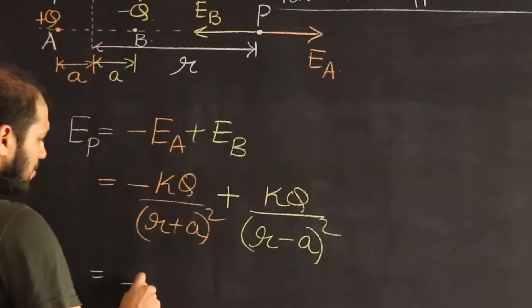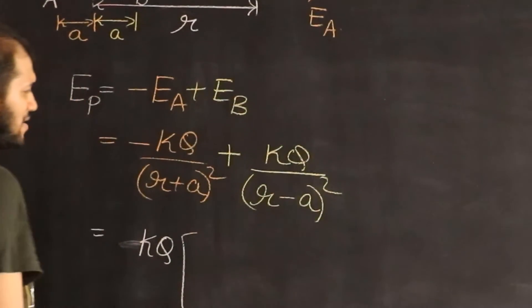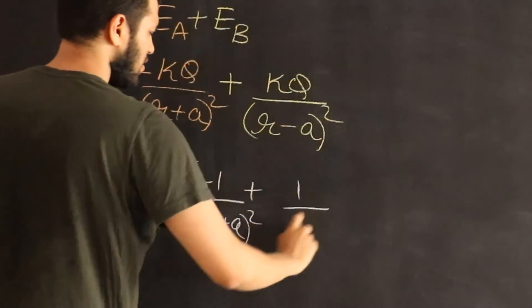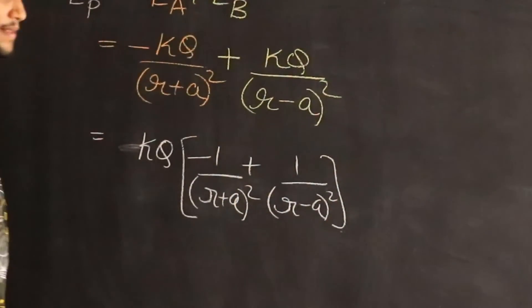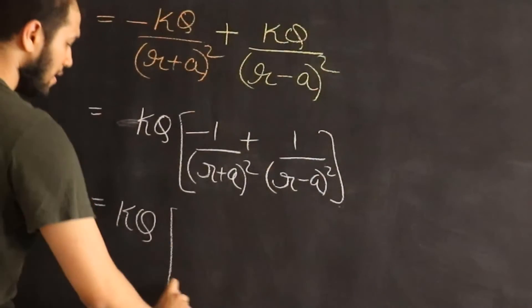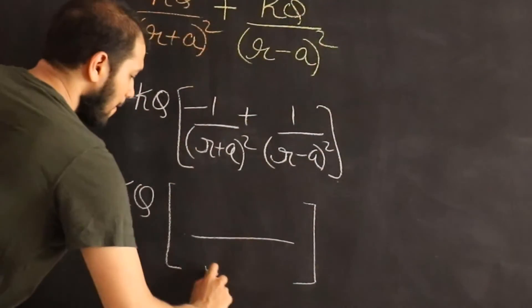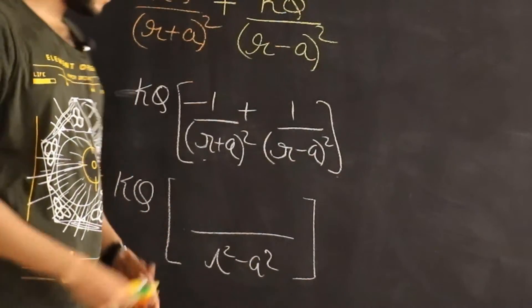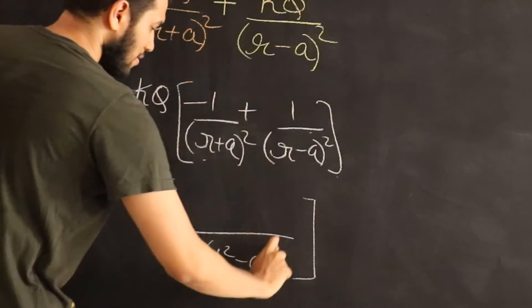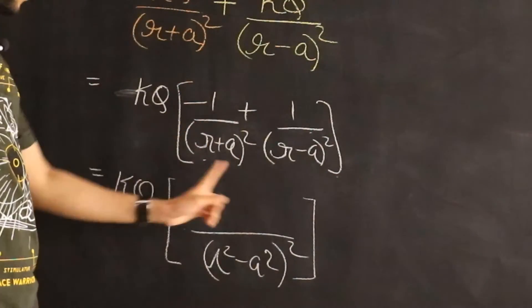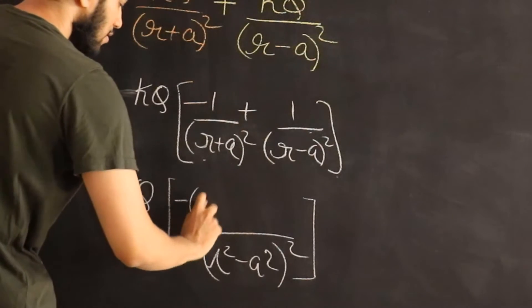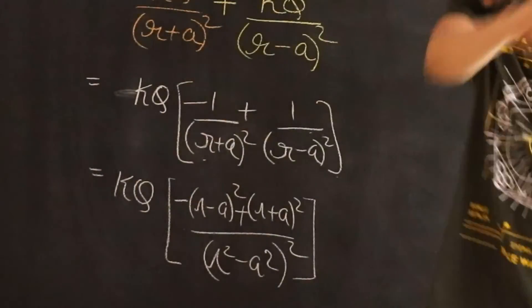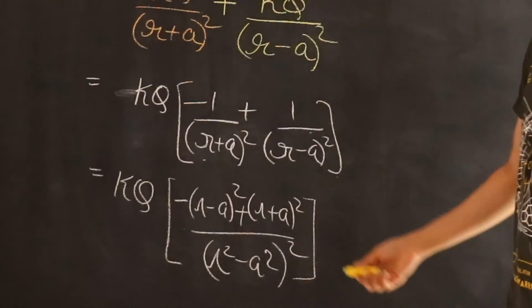If we simplify, we can take kq out. What remains inside is minus 1 by r plus a the whole squared plus 1 by r minus a the whole squared. And when we do that, you get kq into, you get a common denominator of r squared minus a squared. Can you see that r plus a times r minus a is r squared minus a squared, but since I have a square over here, this whole thing gets squared. In the numerator, I will get negative r minus a whole squared plus r plus a the whole squared. You can pause for a while if you want to check the algebra.